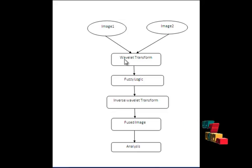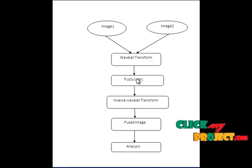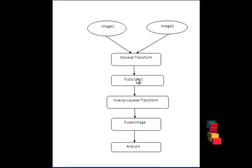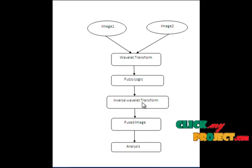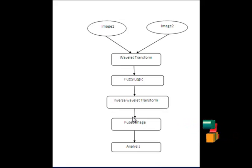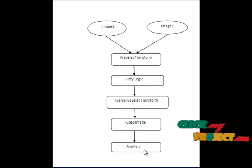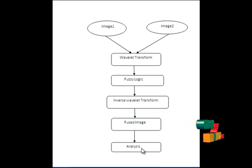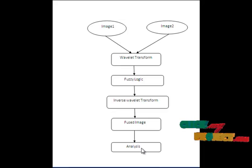The decomposed image is passed to the fuzzy logic. The fuzzy logic will generate the fused image. The fused image is passed to the inverse wavelet transform, and then finally we get the fused image. This fused image is also passed to the analysis, where we calculate MSE, PSNR, and entropy.